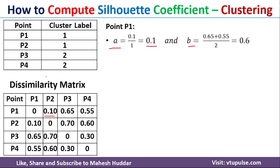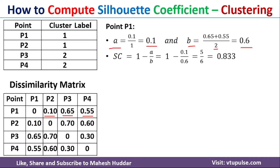The value of b is the average distance from P1 to all points in the other cluster. Apart from cluster 1, there is only cluster 2. We calculate the distance from P1 to P3, which is 0.65, and P1 to P4, which is 0.55. Taking the average: 0.65 plus 0.55 divided by 2 equals 0.6. So b = 0.6. The silhouette coefficient is 1 minus a divided by b, which is 1 minus 0.1 divided by 0.6, equaling 0.833.